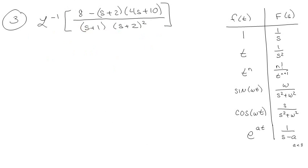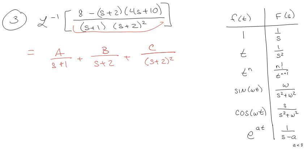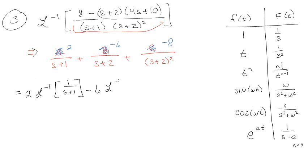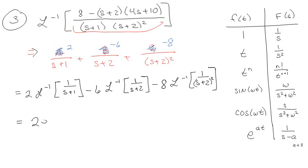Let's do this one. So this expression here is going to be equal to some kind of A over s plus 1, some kind of B over s plus 2, and some kind of C over the quantity (s plus 2) squared. I do math, and math tells me that A is 2, B is negative 6, and C is negative 8. So now I'm going for the inverse Laplace: 2 times the inverse Laplace of 1 over s plus 1, minus 6 times the inverse Laplace of 1 over s plus 2, minus 8 times the inverse Laplace of 1 over (s plus 2) squared. Once you have the coefficients it seems easy, but the hard part for a lot of these is just doing the partial fractions and getting used to how this works.